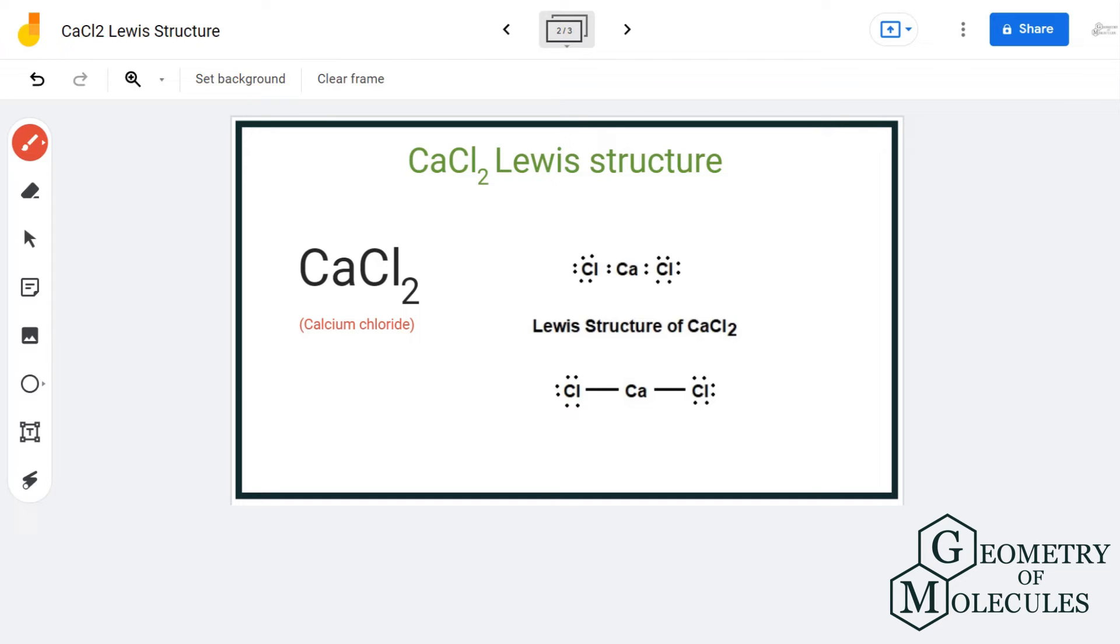You can also write it as Ca+ and Cl-. You can show it like that because calcium is literally just giving away its electrons, not sharing them.